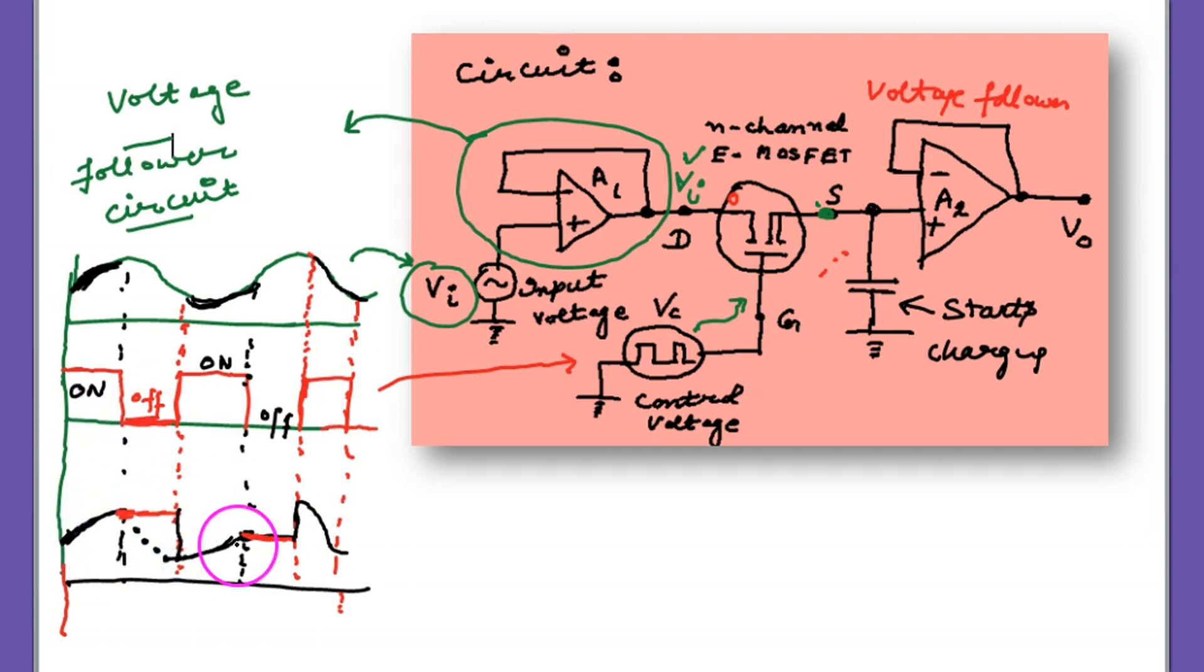Now this was the input analog signal. This was the input. And the red one you are getting, the signal in this color, that is the output.